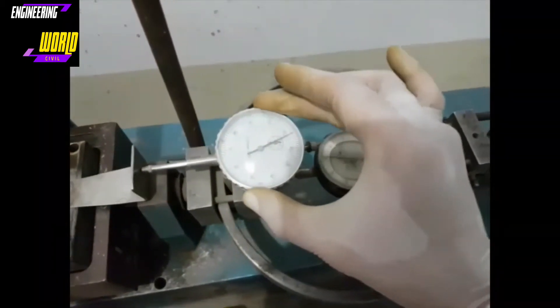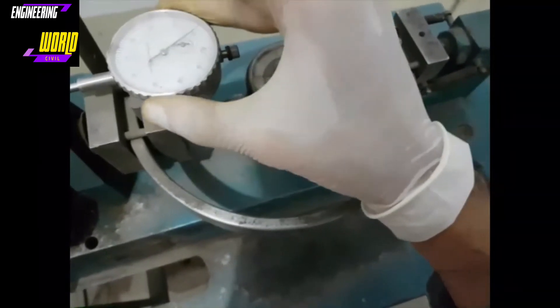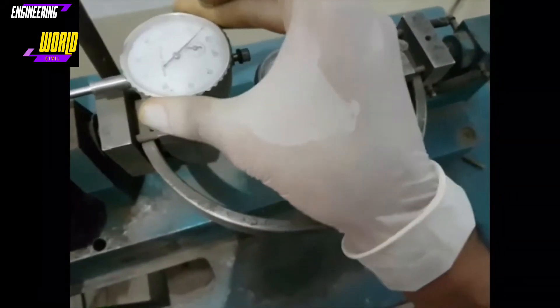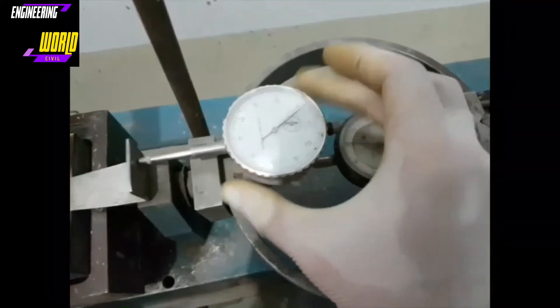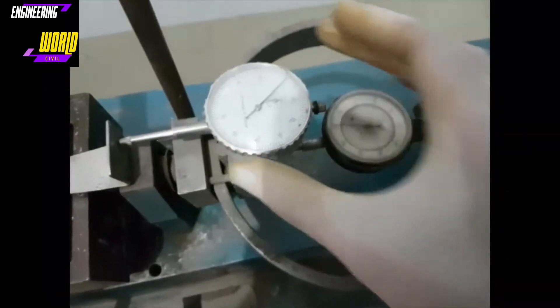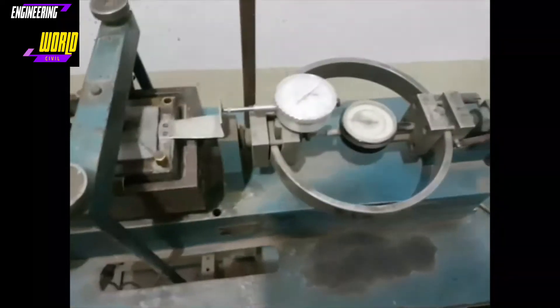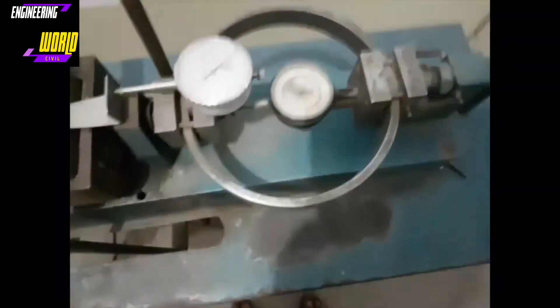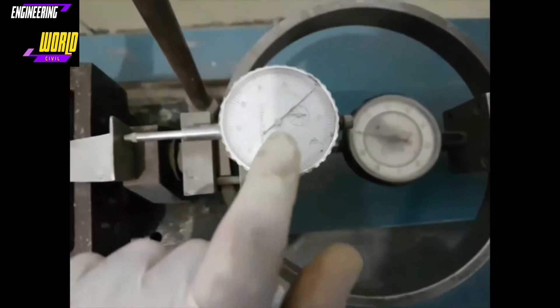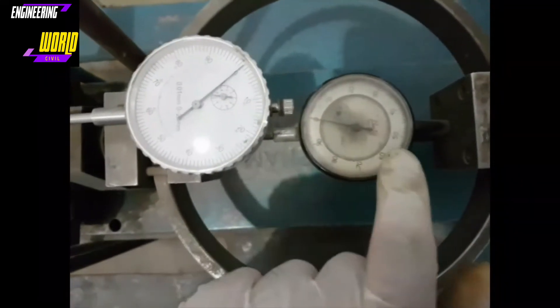Then before we start, we will set the dial gauge to zero as well as the load dial gauge. Then we will turn on the machine. And then for intervals of 10 on the deflection dial gauge, we will note the corresponding value on the load dial gauge.